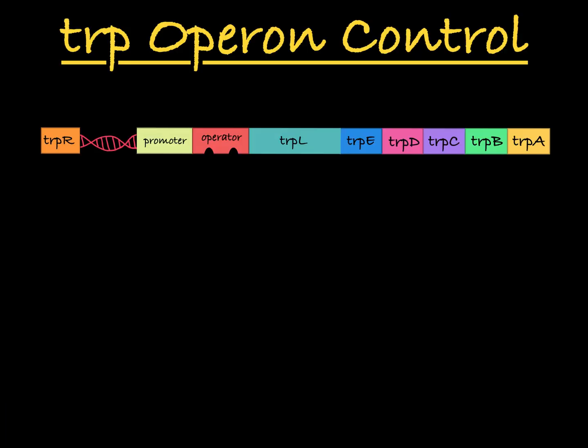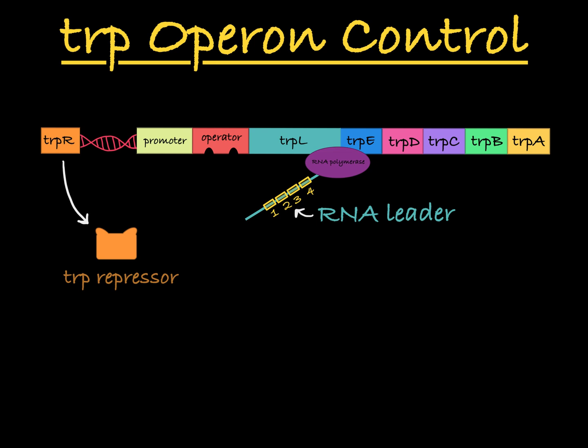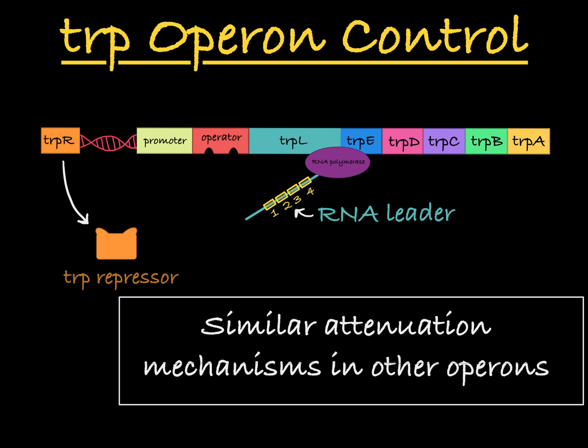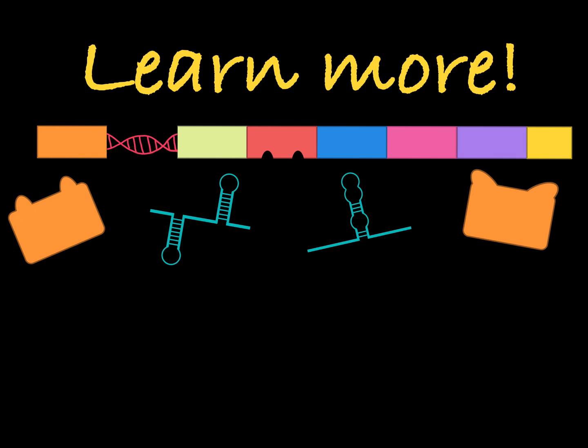This complex system — including both the RNA leader and the trpR repressor — allows the cell to adjust trp operon mRNA production according to the amount of tryptophan in the cell, meaning the cell won't waste energy making something that already exists in abundance. You will see similar attenuation mechanisms in other operons, including histidine, leucine, phenylalanine, and threonine operons. That's trp operon attenuation — check out my other operon videos to learn more.